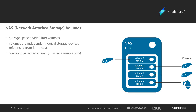Once the NAS device has been configured on the network and the physical storage devices on the unit have been set up and formatted, we can set up our volumes on the unit. We will also need to set up shared folders on these volumes before they can be used with Stratocast. The NAS device used must support multiple volumes per device, not just multiple shared folders per volume.